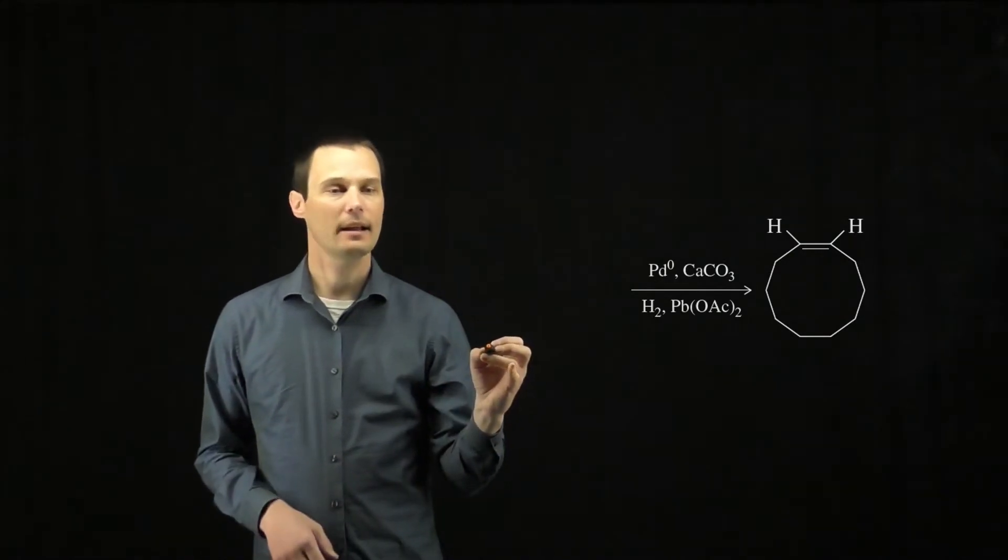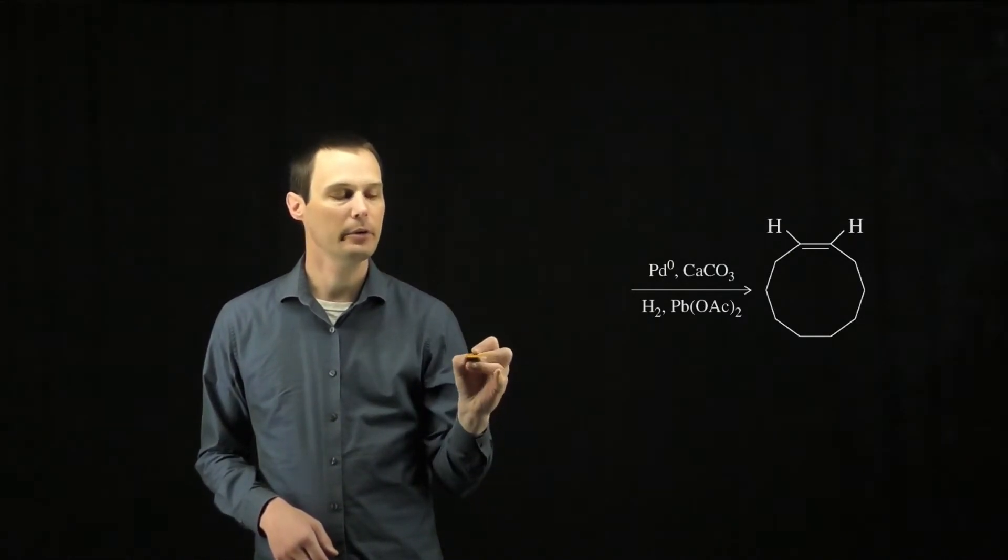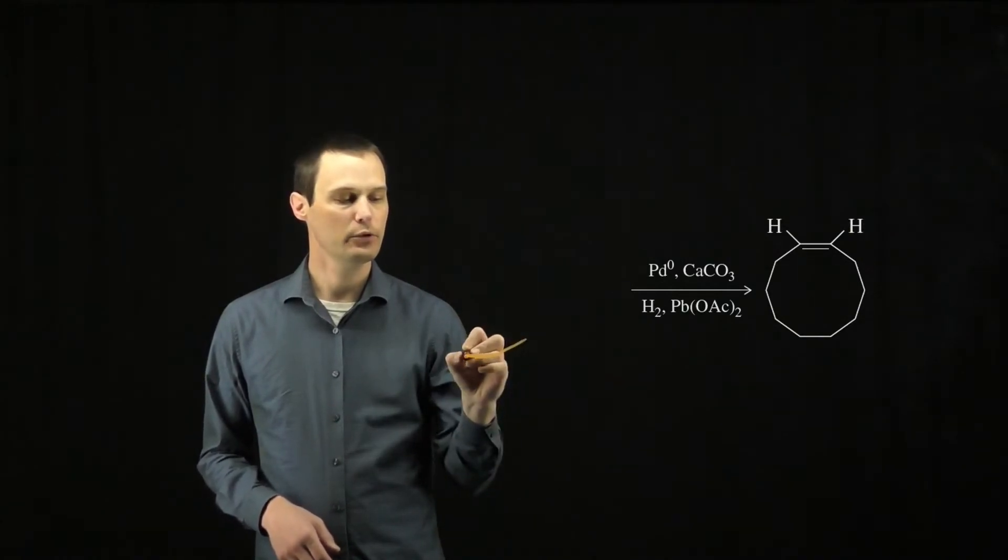This is a 10 atom ring, so we'll draw a 10-carbon chain with an alkyne in the middle. So we'll start at the bottom. We've got two carbons and we'll add two more.